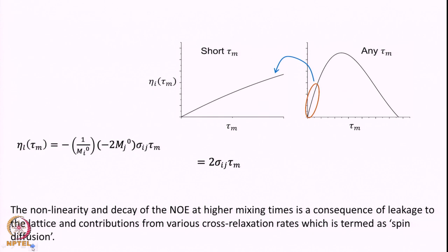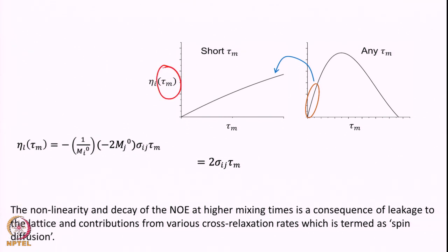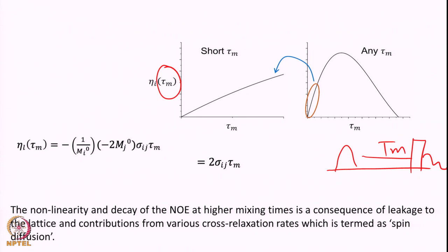We have also seen that the NOE enhancement depends upon a factor called mixing time. This mixing time — if we are doing a transient NOE where we apply a selective pulse on one of the spins and then mix for time Tm and then record a spectrum — this mixing time actually dictates how much NOE effect will be seen. For short mixing time this relationship is linear.